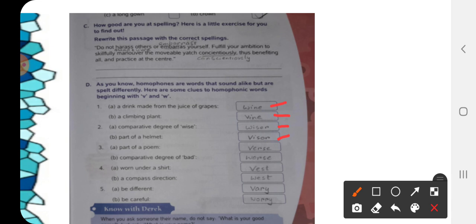Number 3A, comparative degree of bad is worse. W-O-R-S-E. We pronounce it as worse. When I say visor and worse, it sounds almost same.